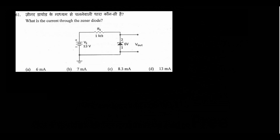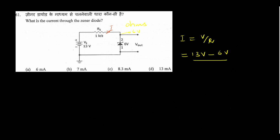Question 61: what is the current through the diode? This is a series circuit, so the current through the resistor equals the current through the diode. Applying Ohm's law: the zener diode acts as a voltage regulator at 6V, so the voltage across the resistor is 13V − 6V = 7V. Current = 7 / 1kΩ = 7 milliamps. The answer is option B.